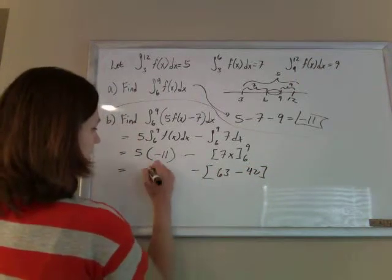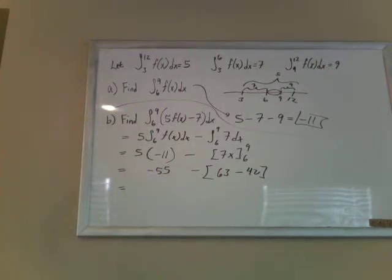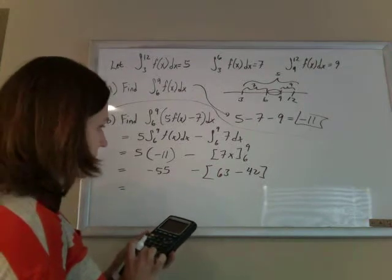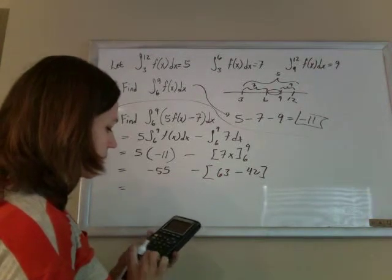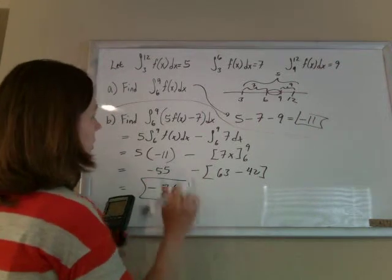And this obviously is negative 55, and you just carry this down. So if I were to grab a calculator, this is negative 55 minus the 63 plus the 42, should give you a negative 76, and that's what you do.